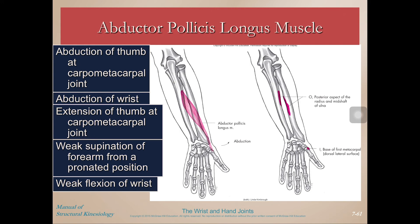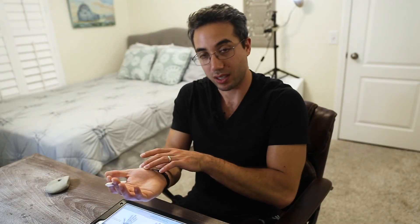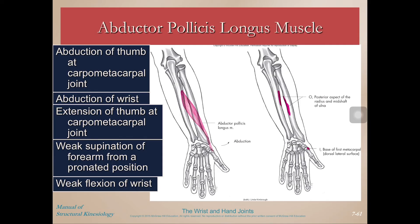Abductor pollicis longus abducts the thumb and abducts the wrist as well, because if it keeps shortening after abducting the thumb it continues pulling toward abduction. It can also extend the thumb at the CMC joint, does weak supination of the forearm from a pronated position, and weak flexion of the wrist.